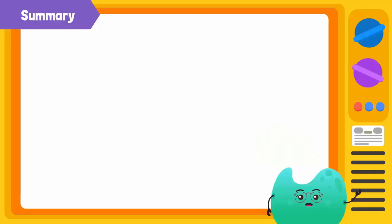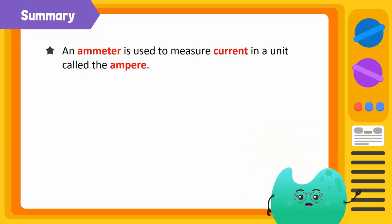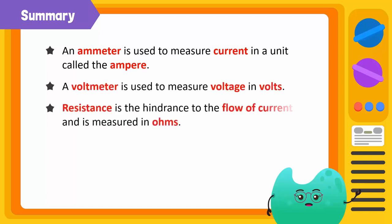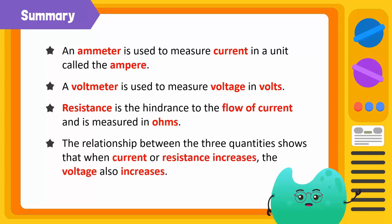To summarize, an ammeter is used to measure current in a unit called the ampere. A voltmeter is used to measure voltage in volts. Resistance is a hindrance to the flow of current and is measured in ohms. The relationship between the three quantities shows that when current or resistance increases, the voltage also increases.